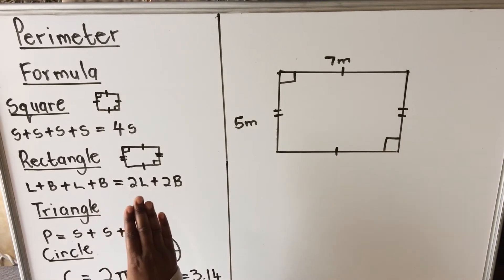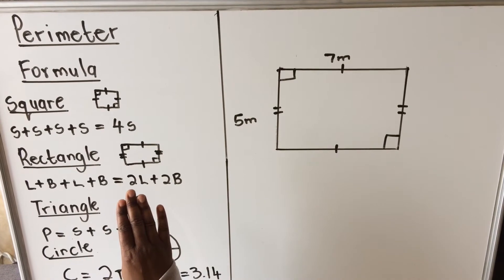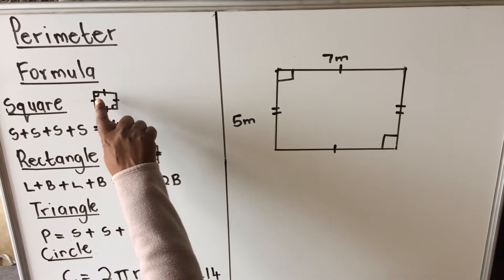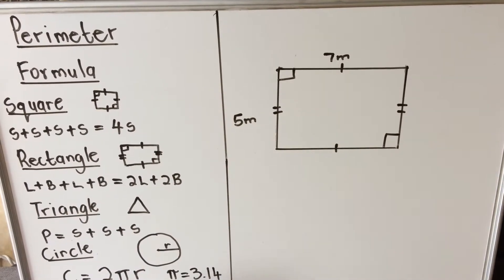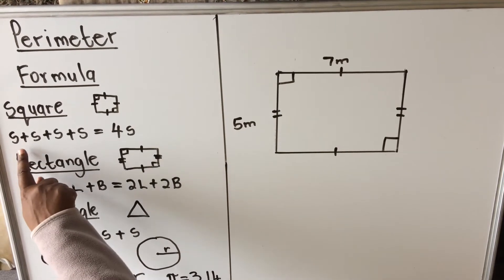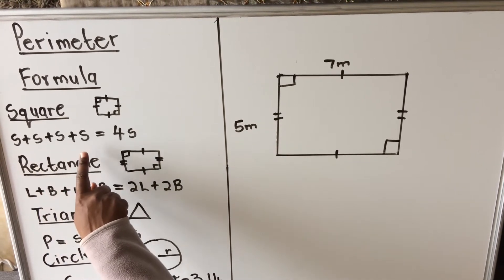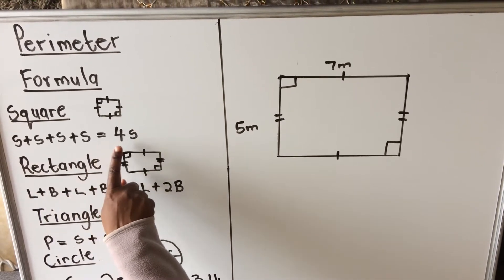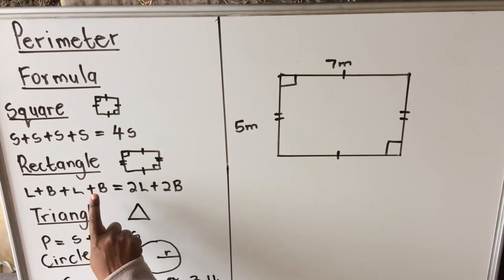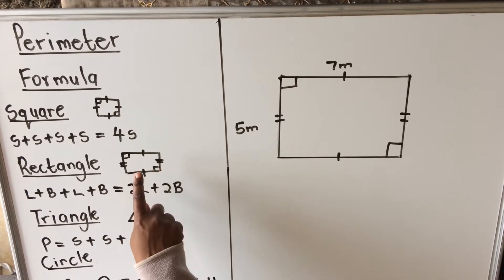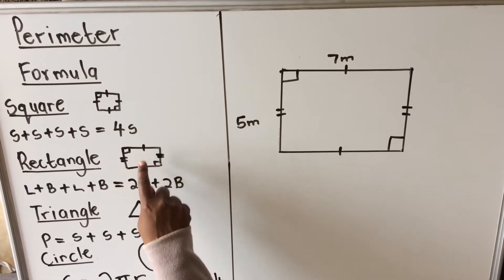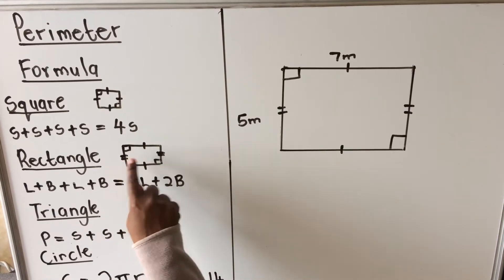Starting with a square: a square is a quadrilateral, a four-sided shape where all sides are equal and each angle is 90 degrees. You add the four sides — side plus side plus side plus side — so the formula is four times side.